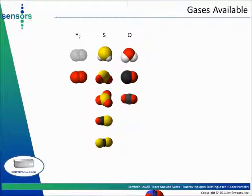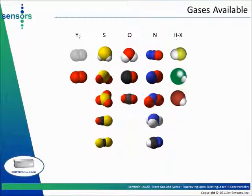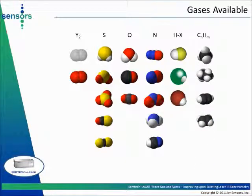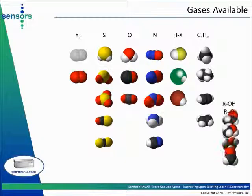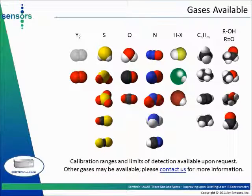The following gases can be measured using the Semteklas R: CO and CO2; nitrogen-containing compounds including N2O, NO, NO2, NH3, and HCN; halogenides including HF, HCl, and HBr; low molecular weight hydrocarbons such as methane, ethane, acetylene, and ethylene; alcohols and aldehydes such as methanol, ethanol, formaldehyde, and acetaldehyde. Most of these gases can also be measured in automotive emissions applications. Calibration ranges and limits of detection are available upon request. Other gases may be available — please contact us for more information.